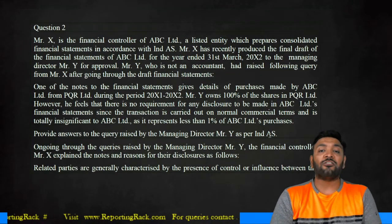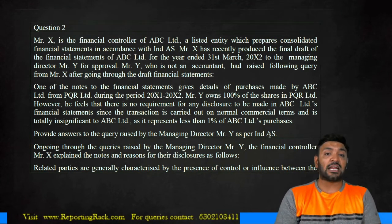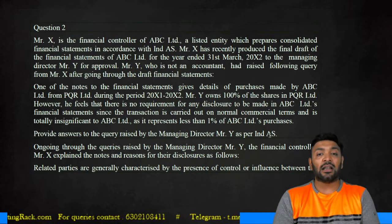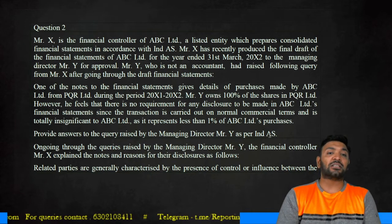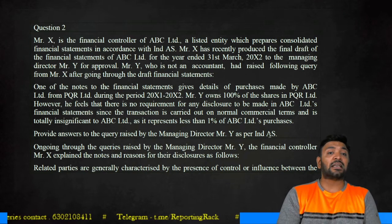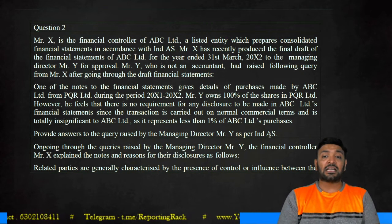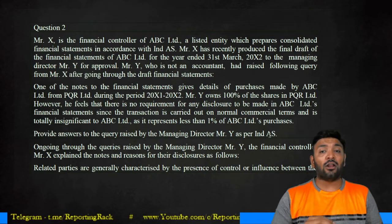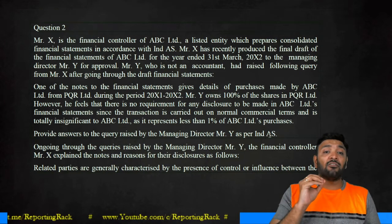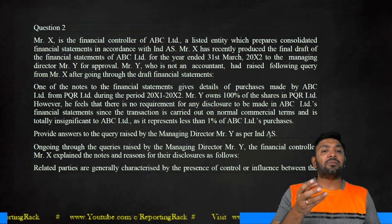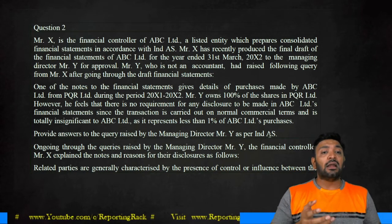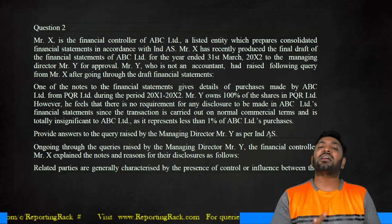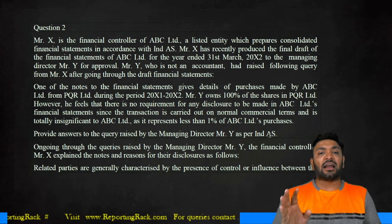X is a financial controller of ABC Limited, a listed enterprise preparing consolidated financial statements. Mr. X provided a final draft of financial statements for the year ending 31st March 2012 to managing director Mr. Y. Mr. Y raised a query: one of the notes gives details of purchases made by ABC from PQR during FY 2011-12. Mr. Y owns 100% shares in PQR but felt there is no requirement for such disclosure since the transaction is on normal commercial terms and represents only 1% of ABC's total purchases.